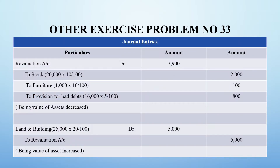For Problem 33, they asked us to pass journal entries. We create a revaluation account. In the journal, assets whose value decreases are posted to the debit side, but here they are on the credit side - Revaluation Account debit to Stock Account and Furniture Account. Both are depreciated at 10%, and a provision has been made at 5%, giving amounts of 2,100 and 800.